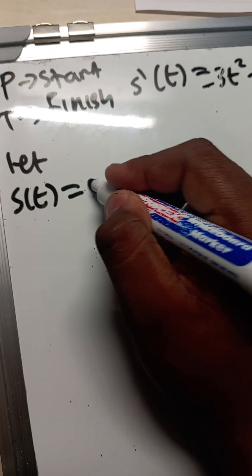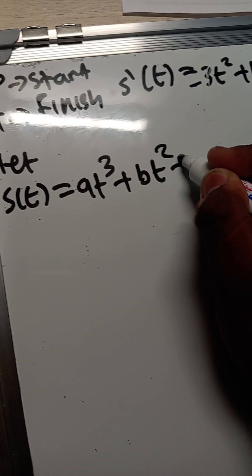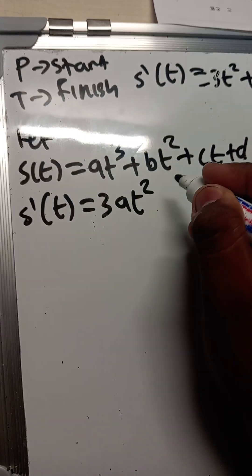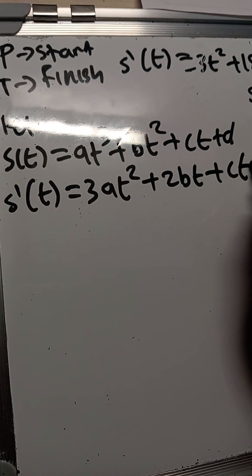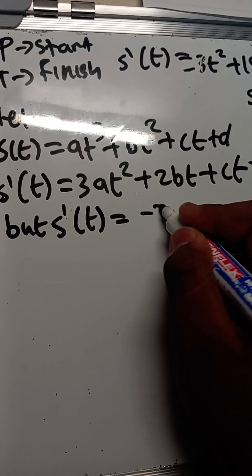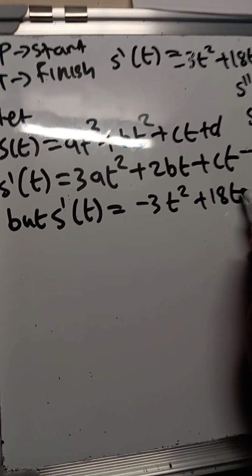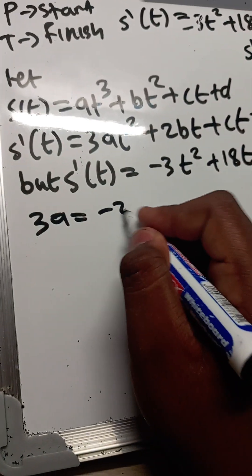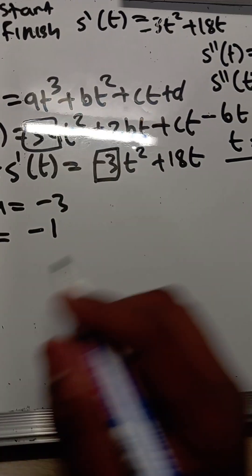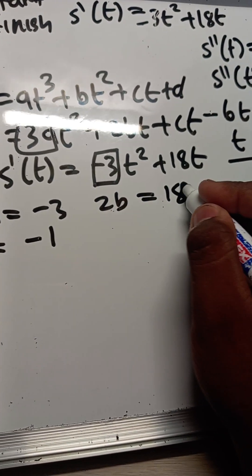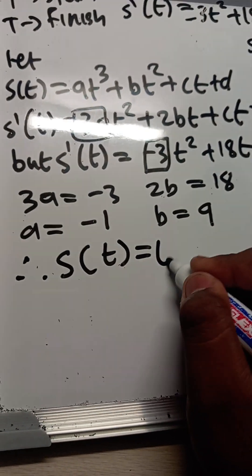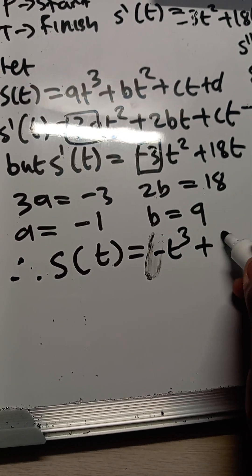Let s(t) = at³ + bt² + ct + d. The first derivative is 3at² + 2bt + c. We are given s'(t) = -3t² + 18t, so matching coefficients: 3a = -3 giving a = -1, and 2b = 18 giving b = 9. Therefore s(t) = -t³ + 9t².